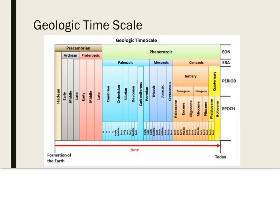Each of the three eras can be divided into periods. Here are the periods of the Paleozoic era, the Mesozoic era, and the Cenozoic era. The current era is Cenozoic and the current period is the Quaternary period. Each period can be divided into epochs — the current epoch, which is part of the Quaternary period, is the Holocene.